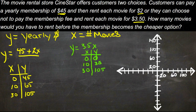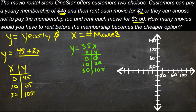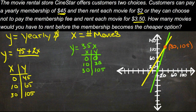Our other equation is y equals 3.50 times x — the total cost is $3.50 per movie with no yearly fee. If we don't rent any movies, we pay nothing. If we rent 10 movies, we pay $35. And if we rent 30 movies, we pay $105.